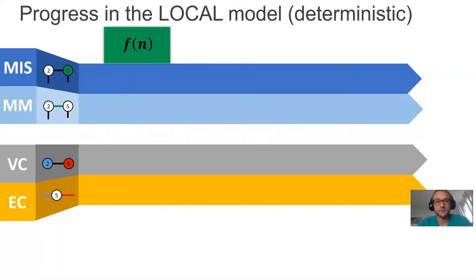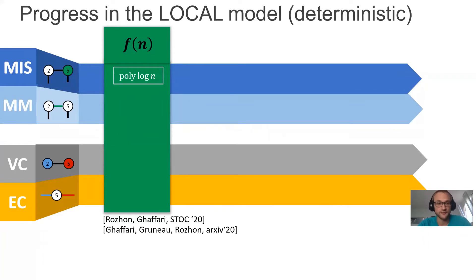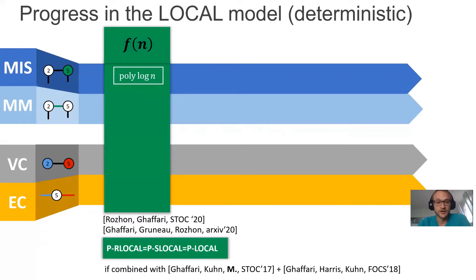However, this breakthrough uses a very generic solution — so generic that you cannot just solve these four problems with it, but using prior work you can solve a very large class of locally checkable problems. All problems which are locally checkable and have an efficient randomized algorithm can also be solved efficiently with deterministic algorithms now. On the downside, these very generic solutions can never go below a runtime of log squared.